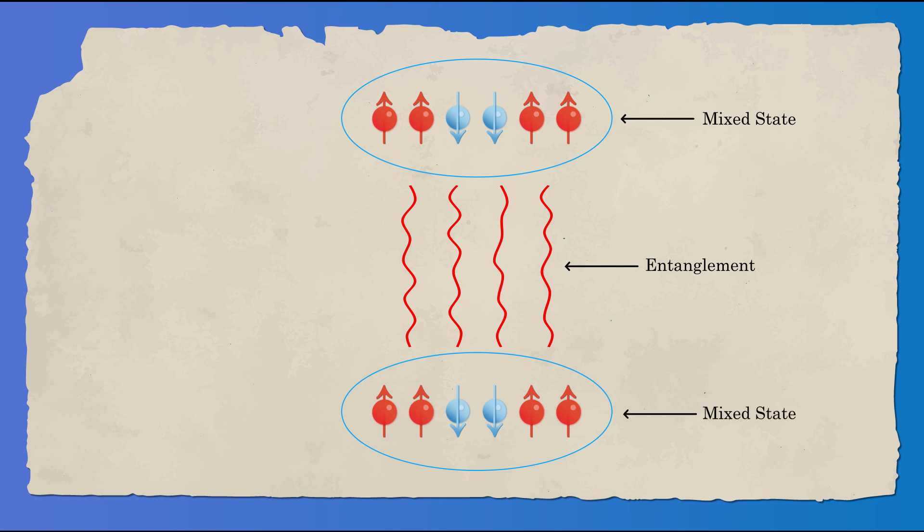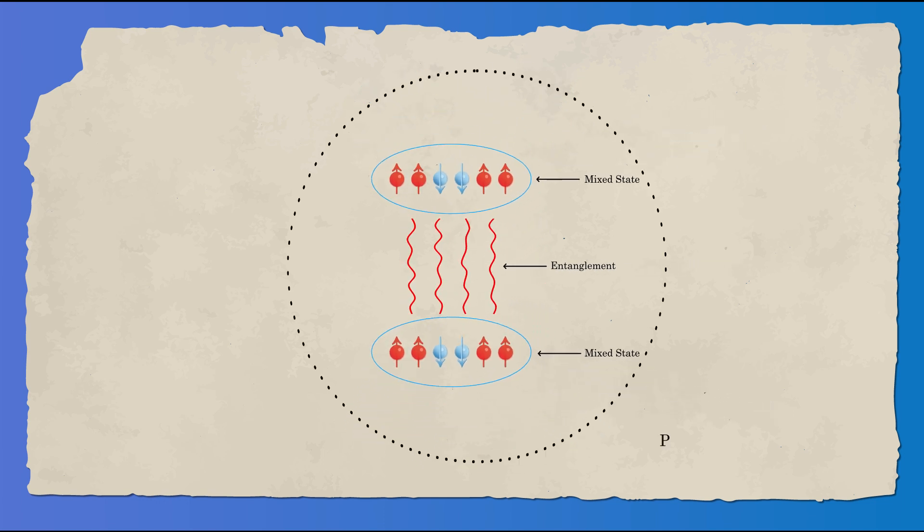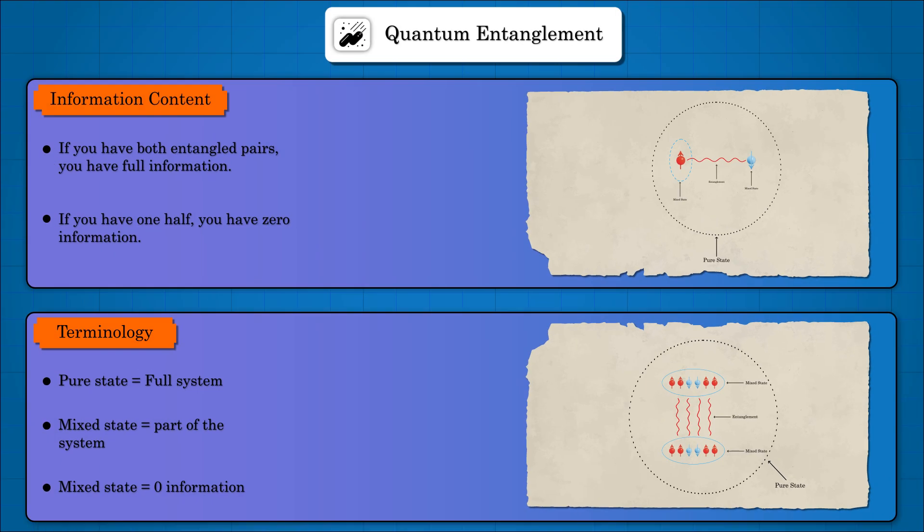So you don't have any more information than a random guess. We think the entire universe is a pure state, but if you look at a small part, it's probably a mixed state because it's entangled with the rest of the universe.